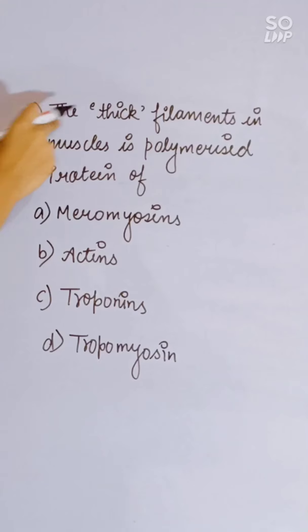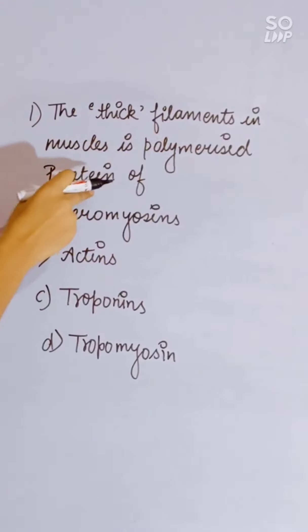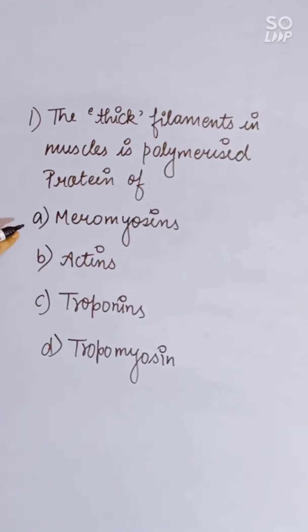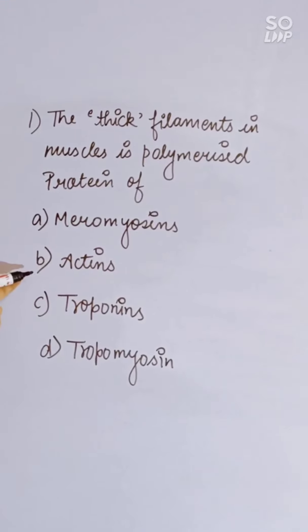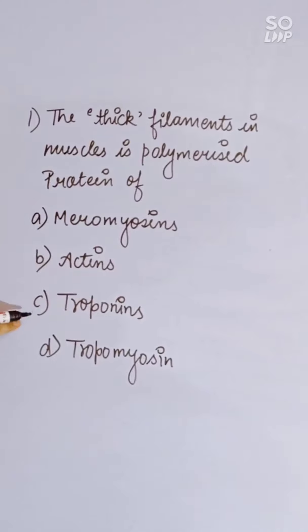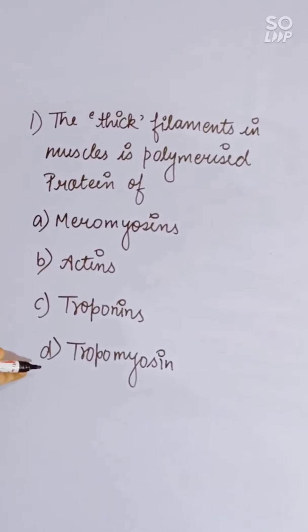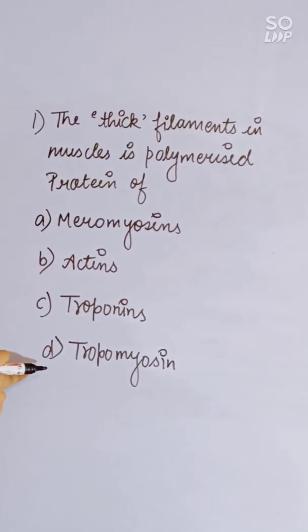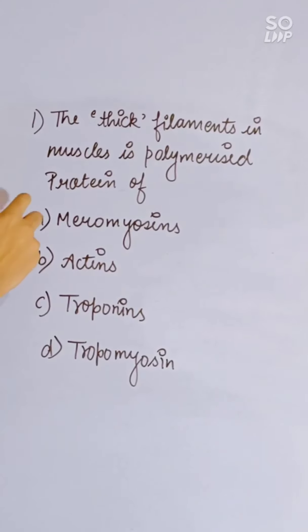The thick filament in muscle is a polymerized protein of: meromyosin, actin, troponin, or tropomyosin. Correct answer is meromyosin.